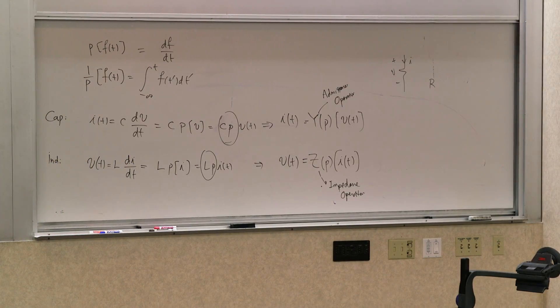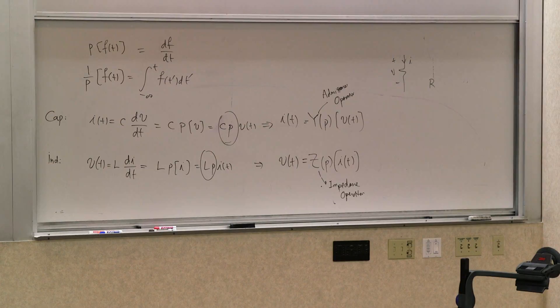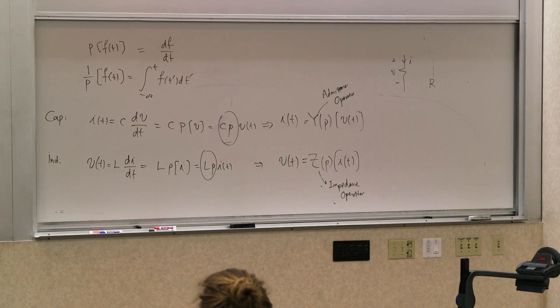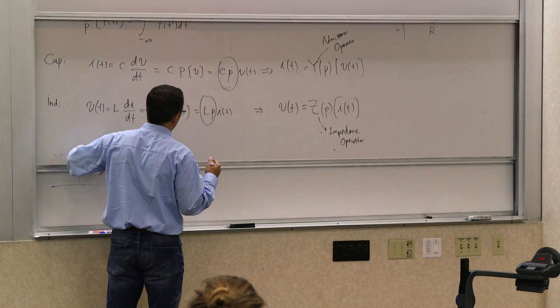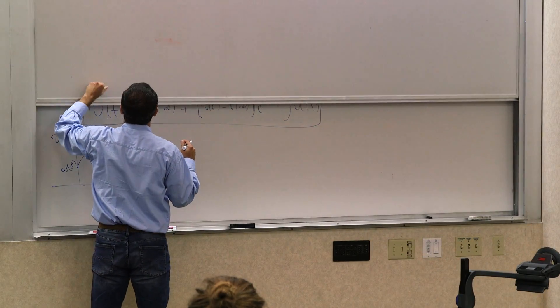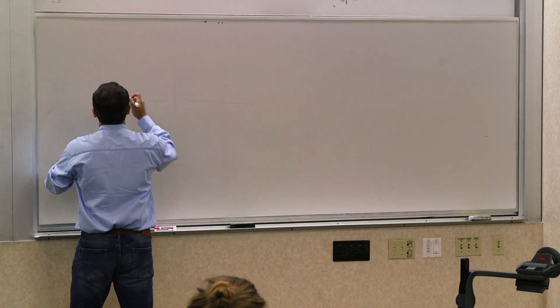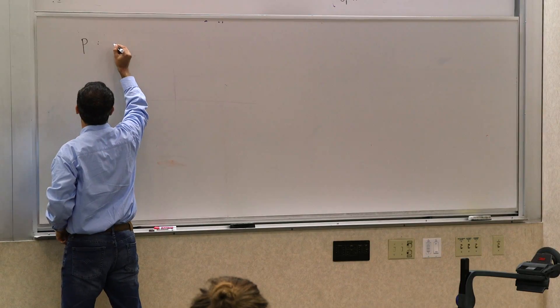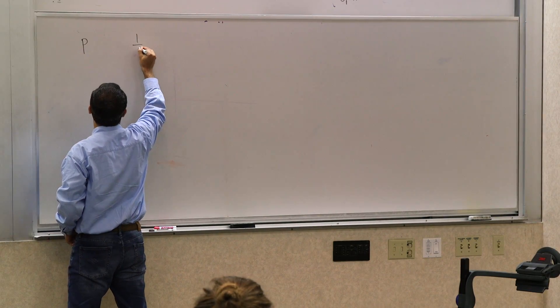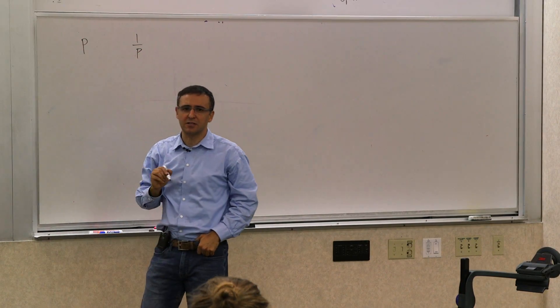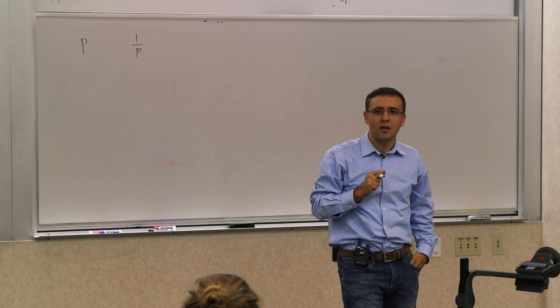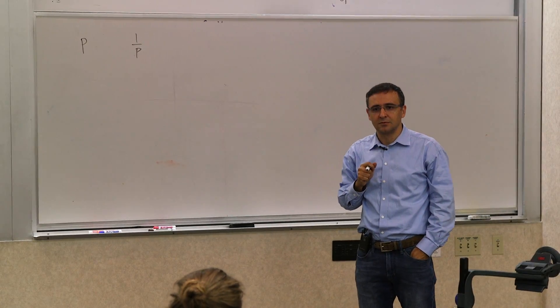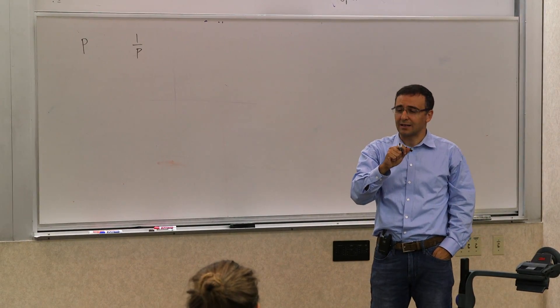Nothing fancy about that. So we could actually do a couple examples for you to get a little bit of dexterity with these things. And say one more thing that's important. So one thing that's important is, are our p operator and 1 over p operator truly inverse operators? What does it mean for them to be inverse operators?